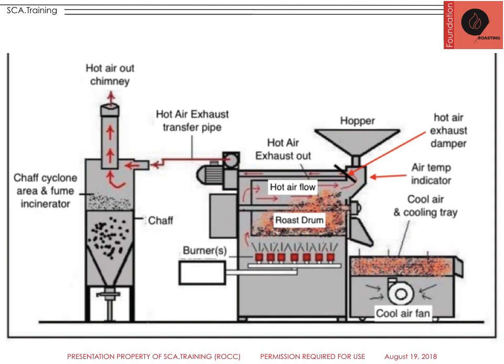Let's start with the hopper — that triangular shape there. The hopper is where you're going to put the green coffee, and while the coffee roaster is coming to the target temperature to charge the beans, we'll wait and release those green coffees when we reach that temperature. The coffee will enter into the roast drum where there will be hot air moving. The roast drum will be heated by the burners below — atmospheric burners, infrared burners, or electric burners.